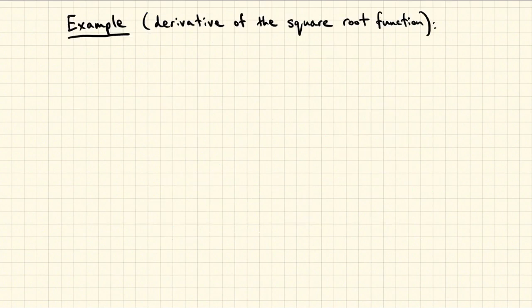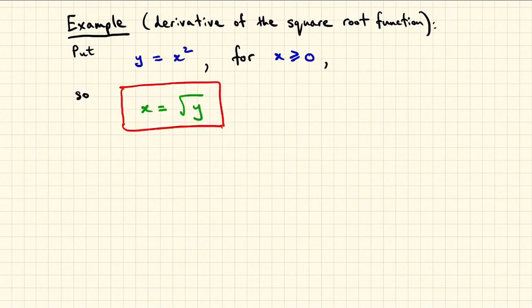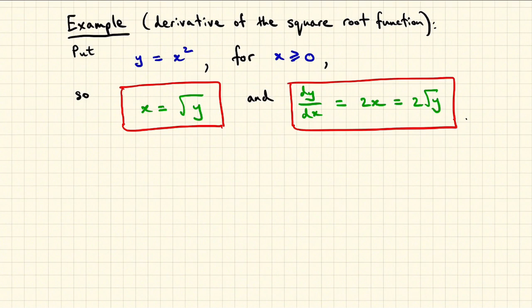Let's try this idea, tipping the Leibniz derivative upside down, to differentiate the square root function. Start off with the squaring function, y equals x squared, and focus on x greater than or equal to 0 so that x is just the square root of y. We know the derivative of y with respect to x is just 2x, and this is 2 times the square root of y. We now form dx dy, which is the reciprocal of dy dx, which becomes 1 over 2 times the square root of y.